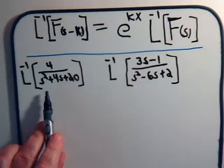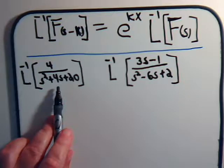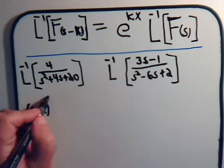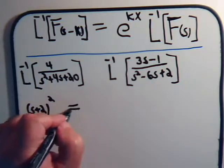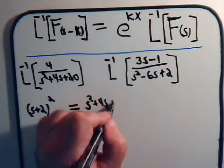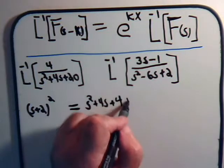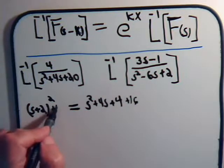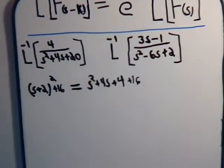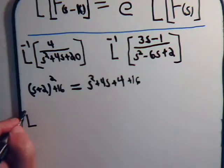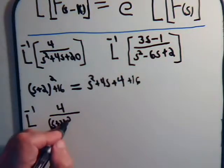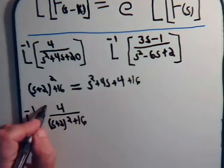We start off with the complete-the-square technique. So we take half of that coefficient, and that gives us s plus 2 squared. We multiply that out as s squared plus 4s plus 4. So if we add 16 to that, it will give us that quantity right there. So we can rewrite the problem. We're going to take the inverse Laplace transform of 4 divided by (s plus 2) squared plus 16.